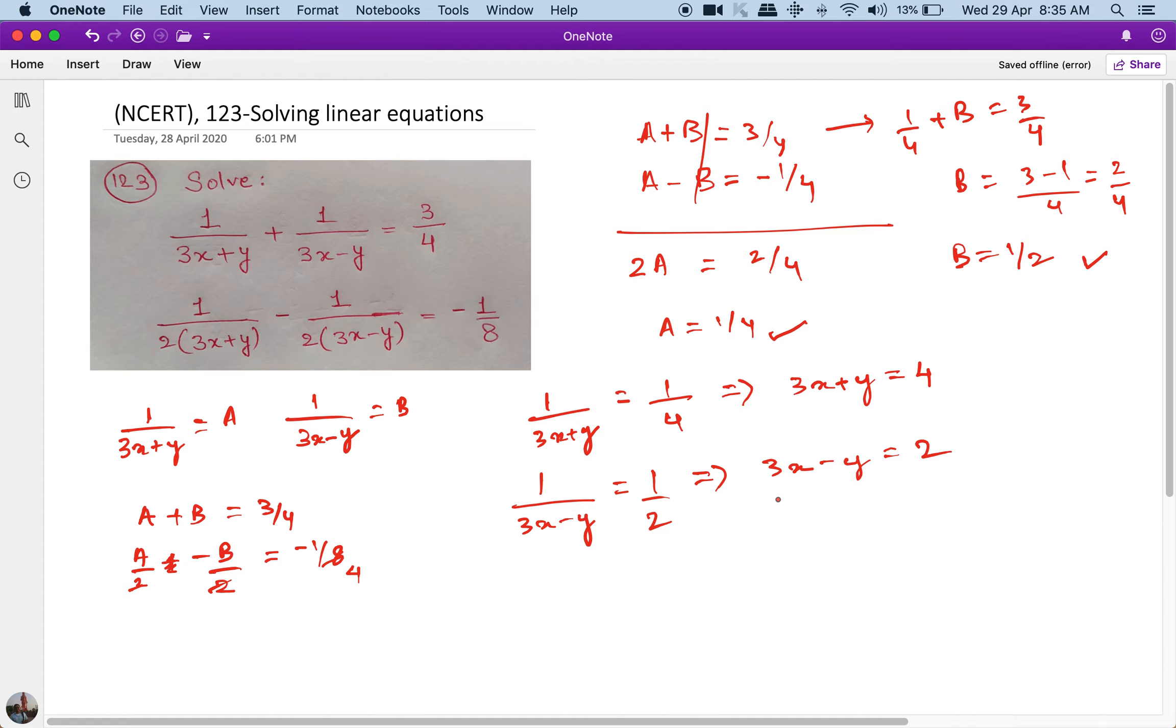Now I have to solve. So remember, this was my equation 1 given, this was my equation 2 given. I reduced 1 and 2 to 3 and 4. I tried solving 3 and 4 to get the value of A and B, which I got here. And then equations 3 and 4 gave me two equations in x and y, which is my equation 5 and this is my equation 6.